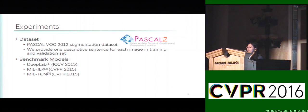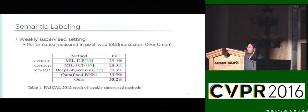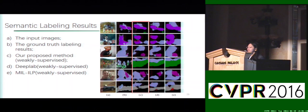Our experiment is conducted on the Pascal VOC 2012 Segmentation Dataset, and we provide description sentences for each image in the training and validation sets. The first experiment is weakly supervised scene labeling. Our model achieves 35.2% IOU, better than other methods. We can see that when the network parameters are not updated, performance drops to 33.5%, demonstrating the effectiveness of our joint optimized network. We also show some visualized semantic labels by our weakly supervised framework, and more accurate and meaningful segmentation results are obtained by our method.